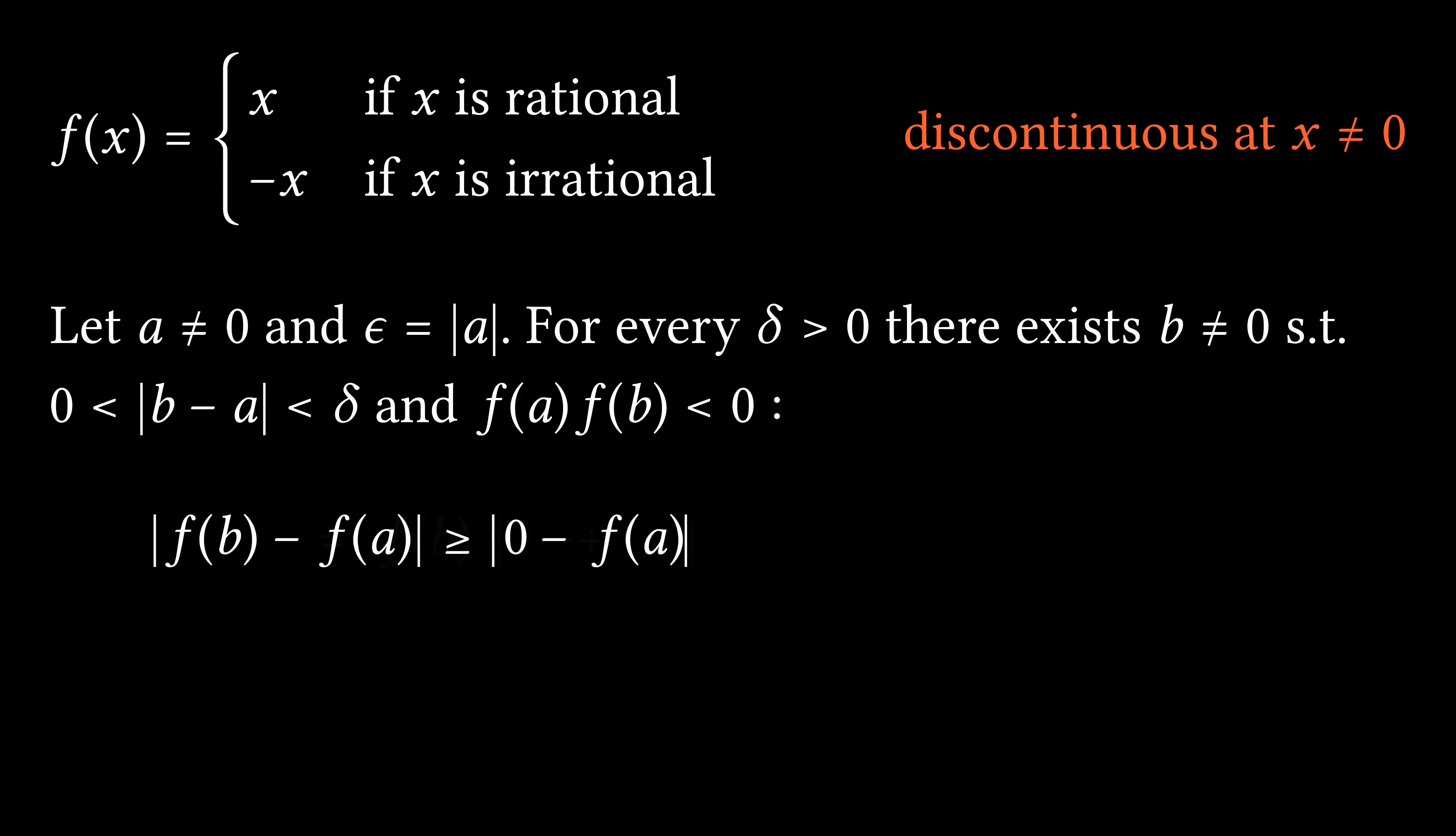This sum is greater than or equal to the distance from f(A) to zero, which equals the absolute value of f(A). But this is simply the absolute value of A, and by our choice of epsilon, this equals epsilon.